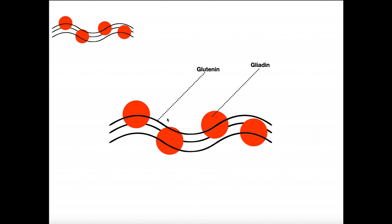Gluten is composed of two parts: one called glutenin and another called gliadin. These black strand-like proteins that you can see here are called glutenins. Glutenin is a class of proteins, but they all kind of look like this.